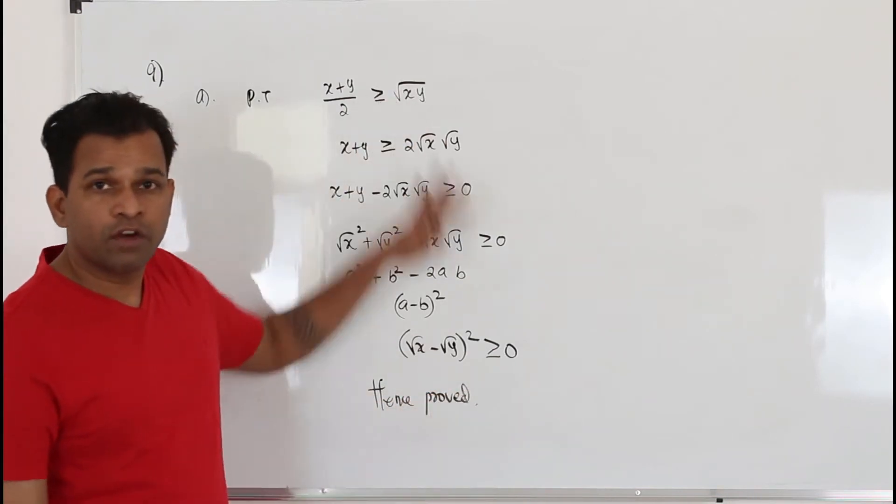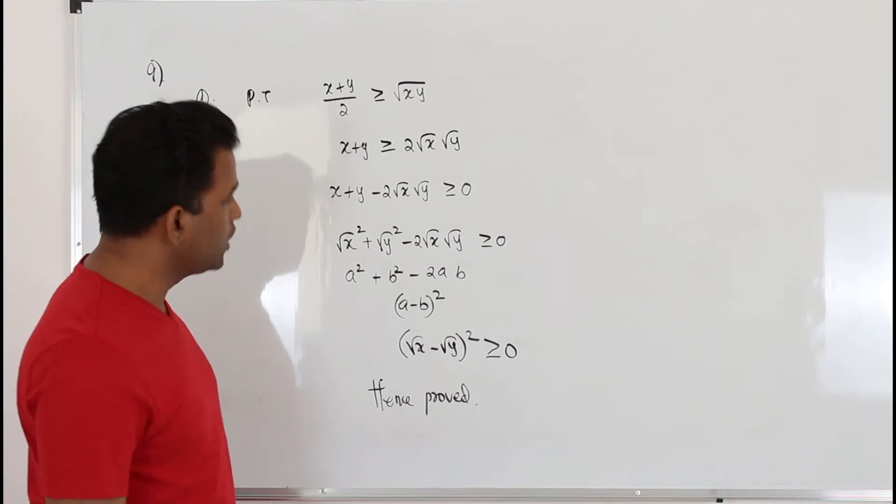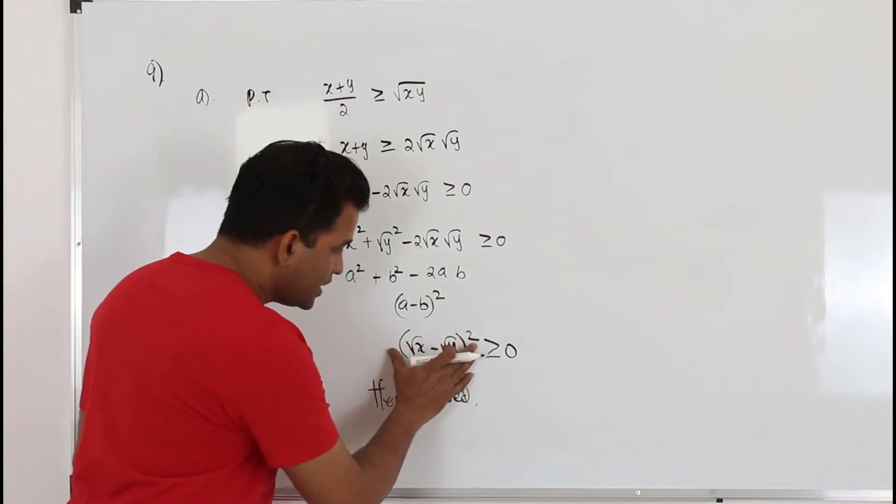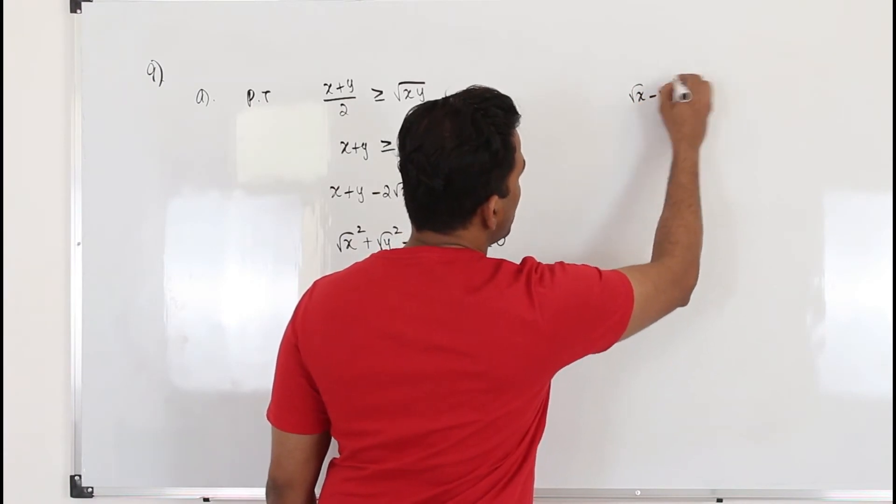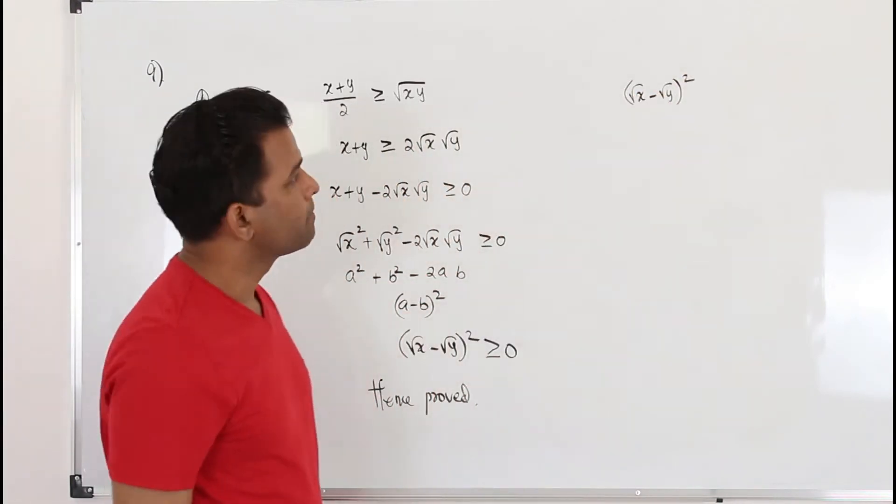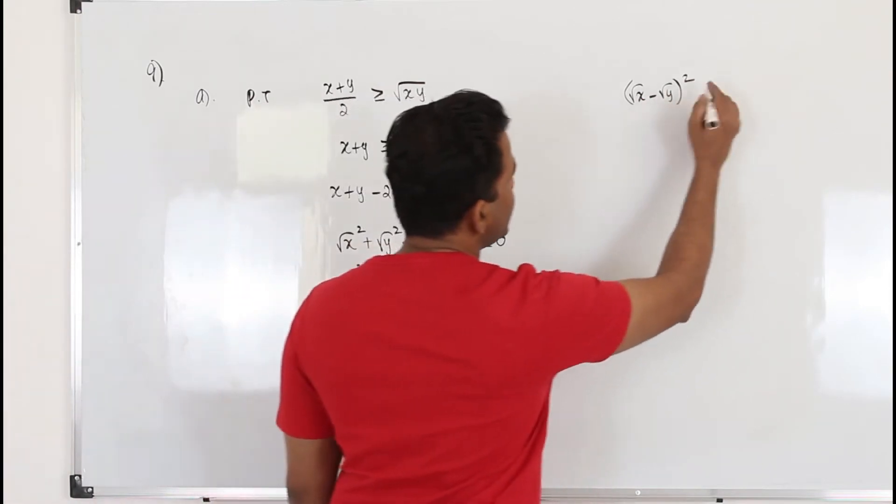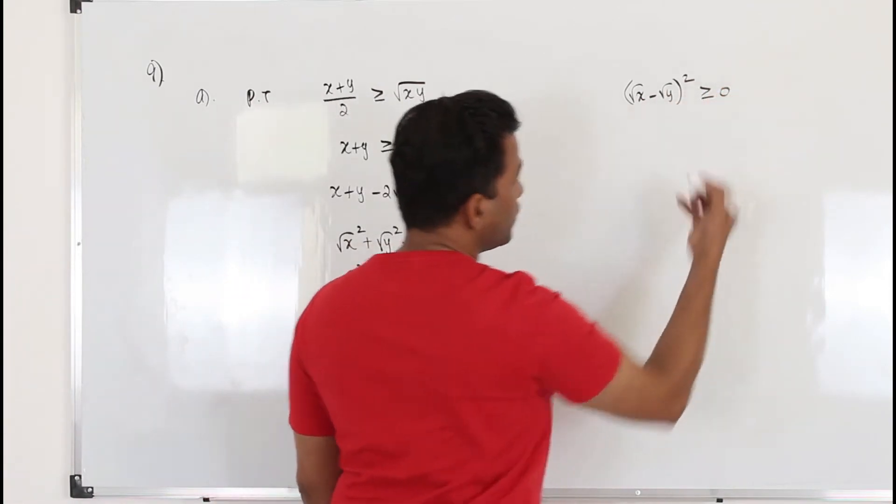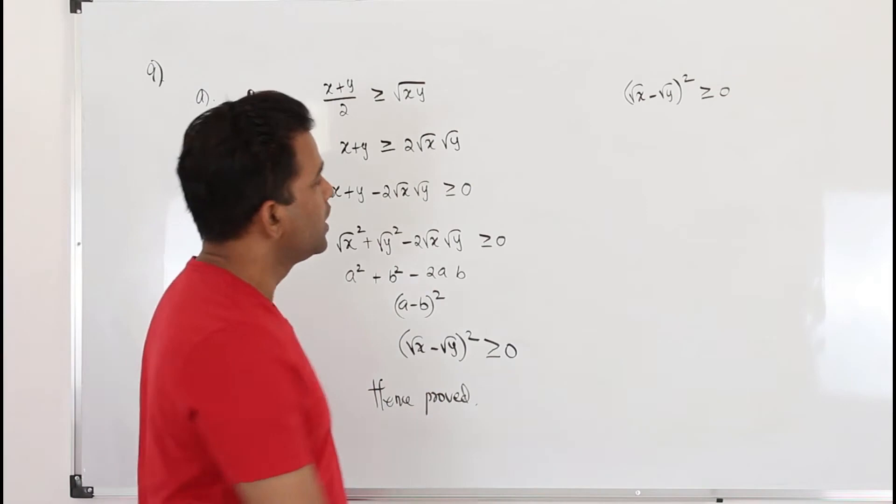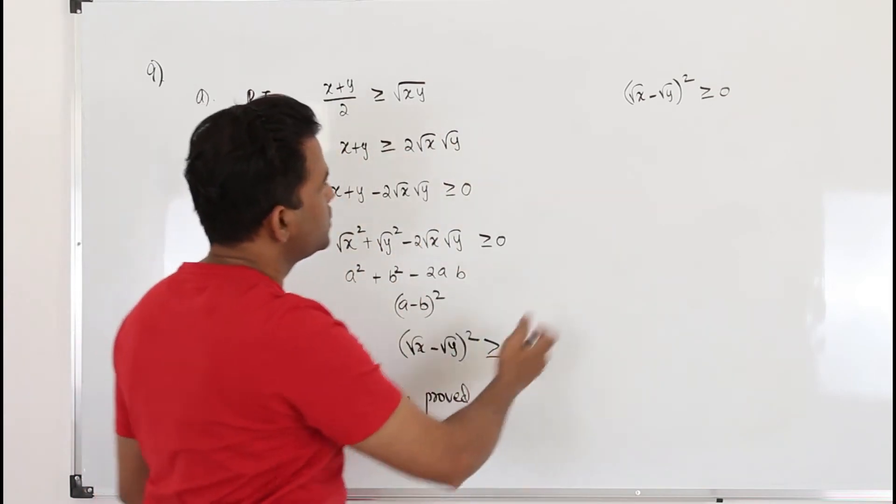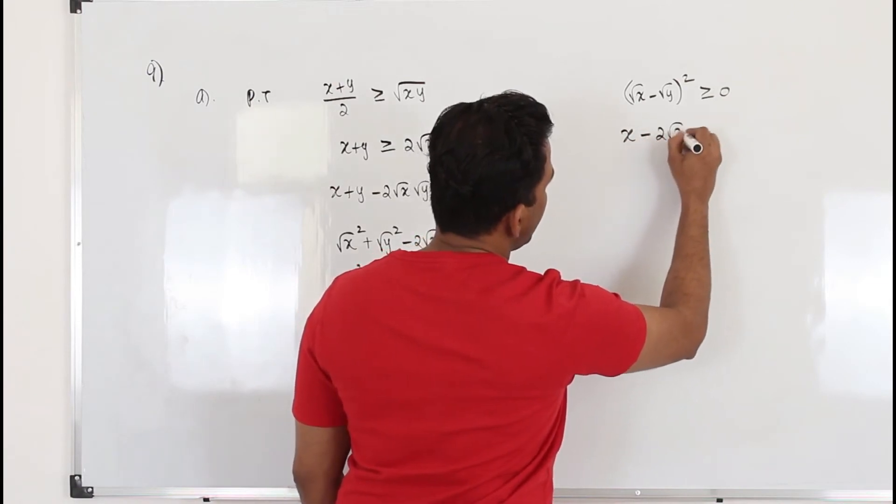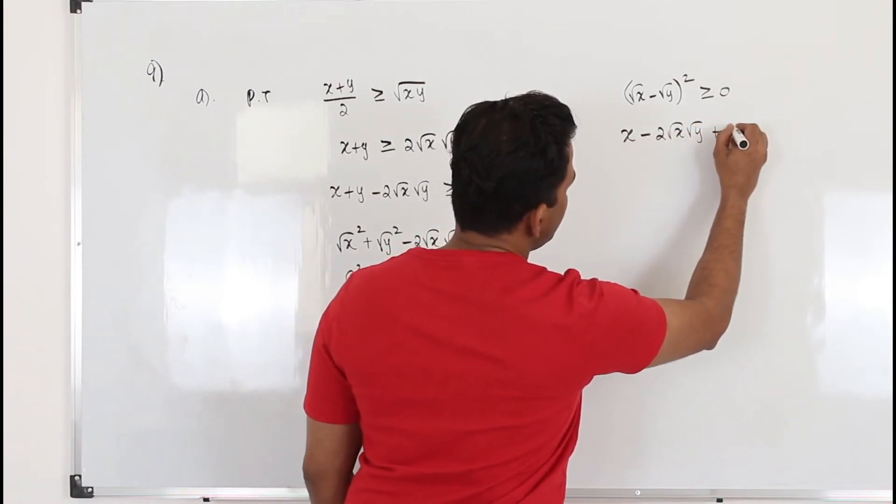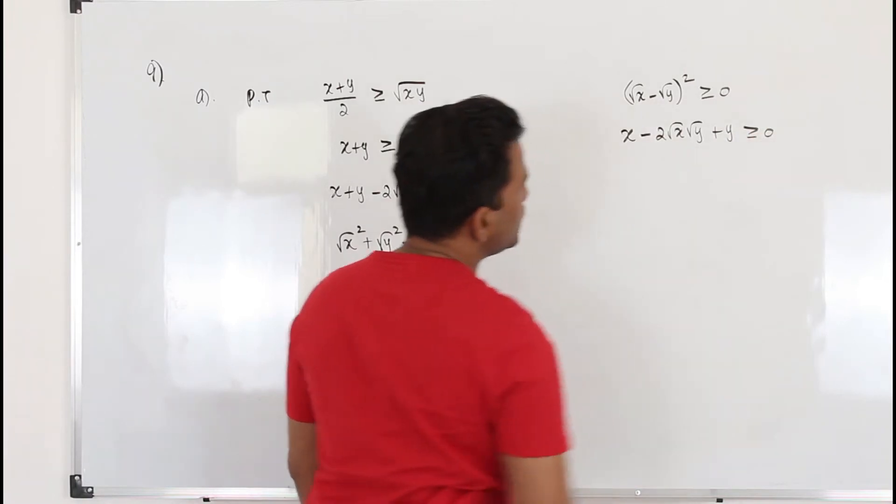That's one way of proving. I'll show another one. Start from this expression: square root of x minus square root of y whole square. And we know definitely this is positive or greater than or equal to 0. And then just work it backwards.